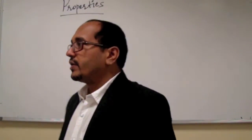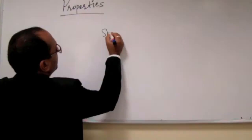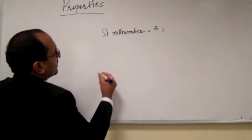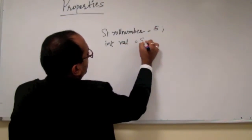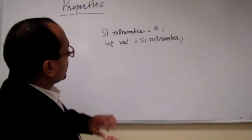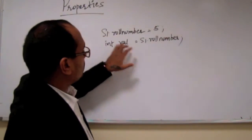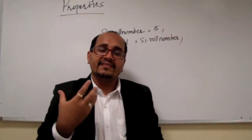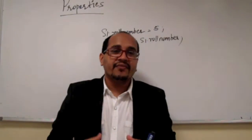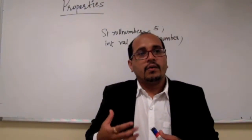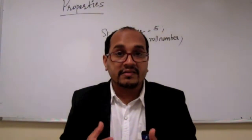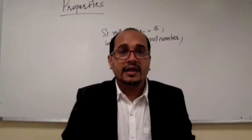If you declare a roll number in S1, you can access S1.rollNumber = 5, or you can have S1.rollNumber to get. The dot operator acts as a setter on one side and as a getter on the other. Basically, a property is nothing but a getter and setter for your variable. Properties and member variables are different things — a member variable is a state whereas a property is a function, a behavior.